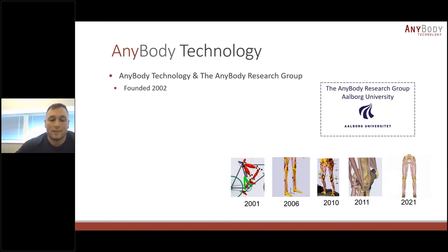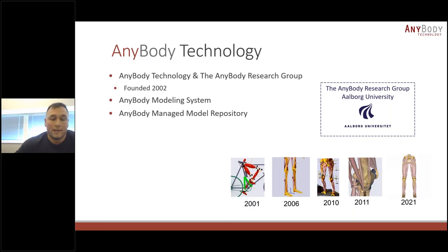The research at AnyBody Research Group really has musculoskeletal modeling as the backbone of its overall research. Today AnyBody develops and distributes the AnyBody Modeling System, which is a software for musculoskeletal modeling, along with the AnyBody Managed Model Repository — basically a library consisting of several body models, different application examples, and validation examples from researchers around the globe.